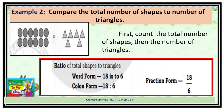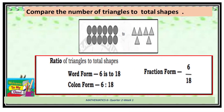Another example — example number 2. Compare the total number of shapes to the number of triangles and vice versa. First, count the total number of shapes, then the number of triangles. So, the ratio of total shapes to triangles is 18 is to 6. The ratio of triangles to total shapes is 6 is to 18. In example 2, it is the comparison of part to whole.